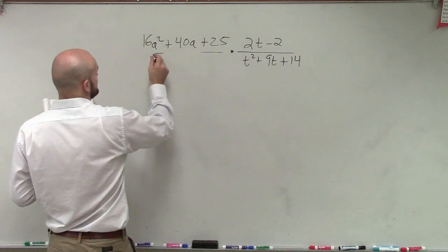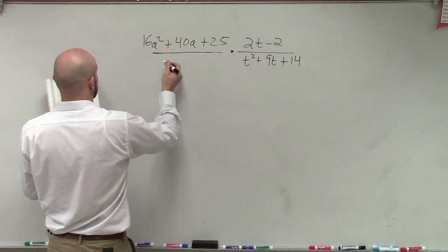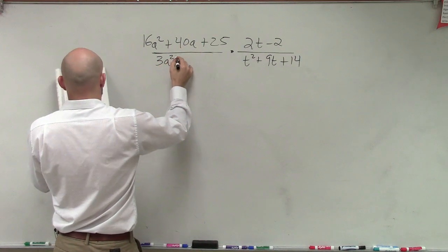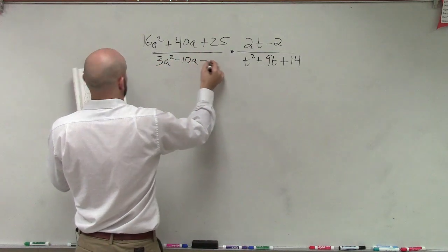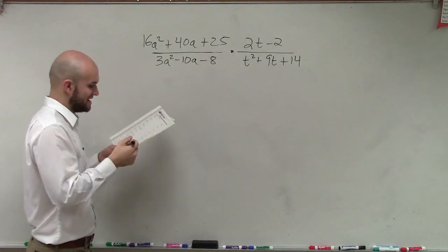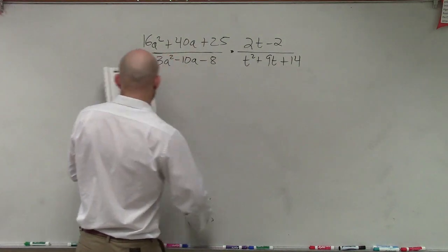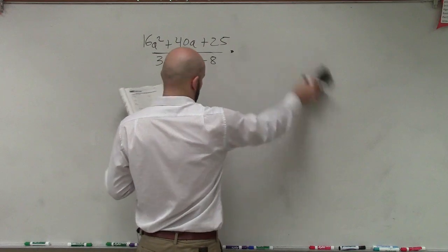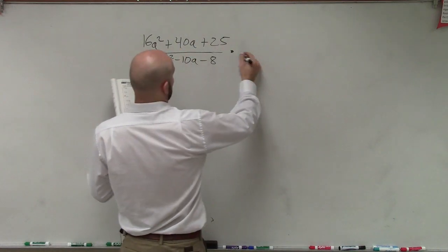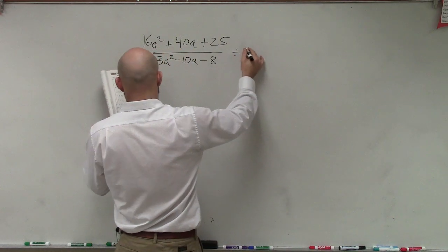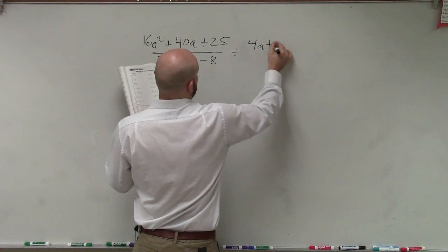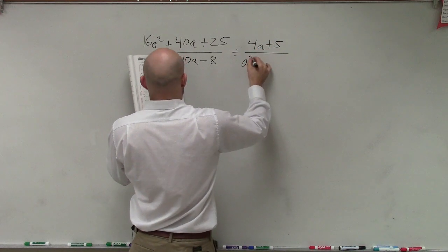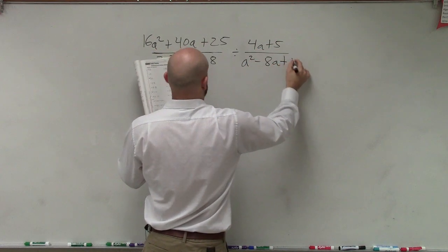Okay, so let's rewrite this. So 16a squared plus 40a plus 25, oh wow. This then becomes 3a squared minus 10a minus 8. Oh man, I totally messed up. So this becomes divided by 4a plus 5 divided by a squared minus 8a plus 16.